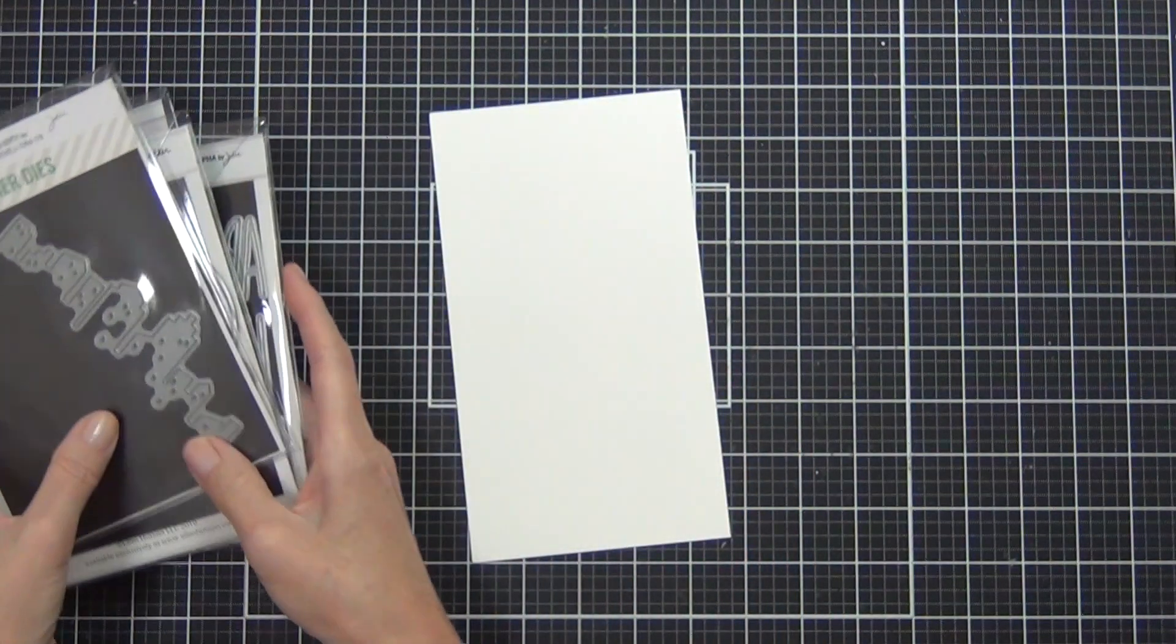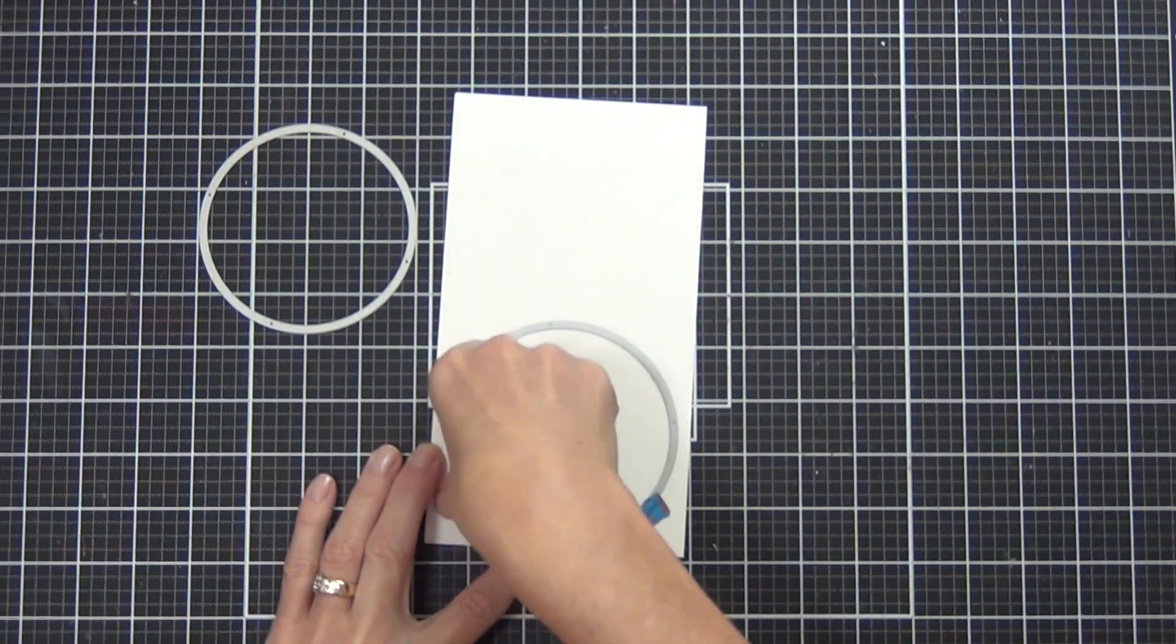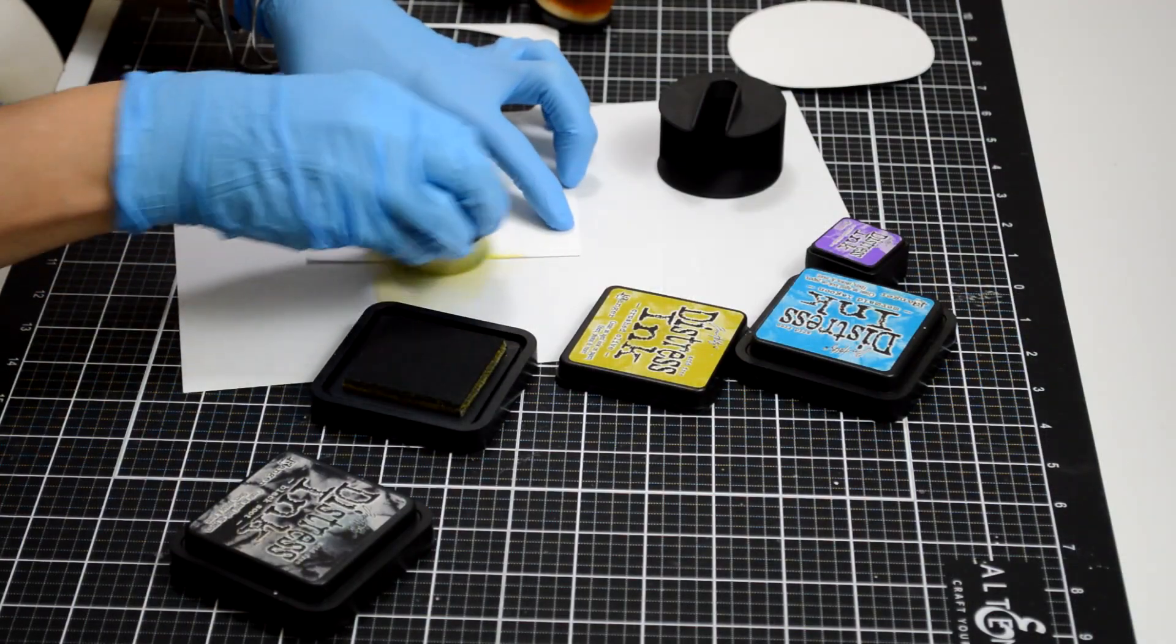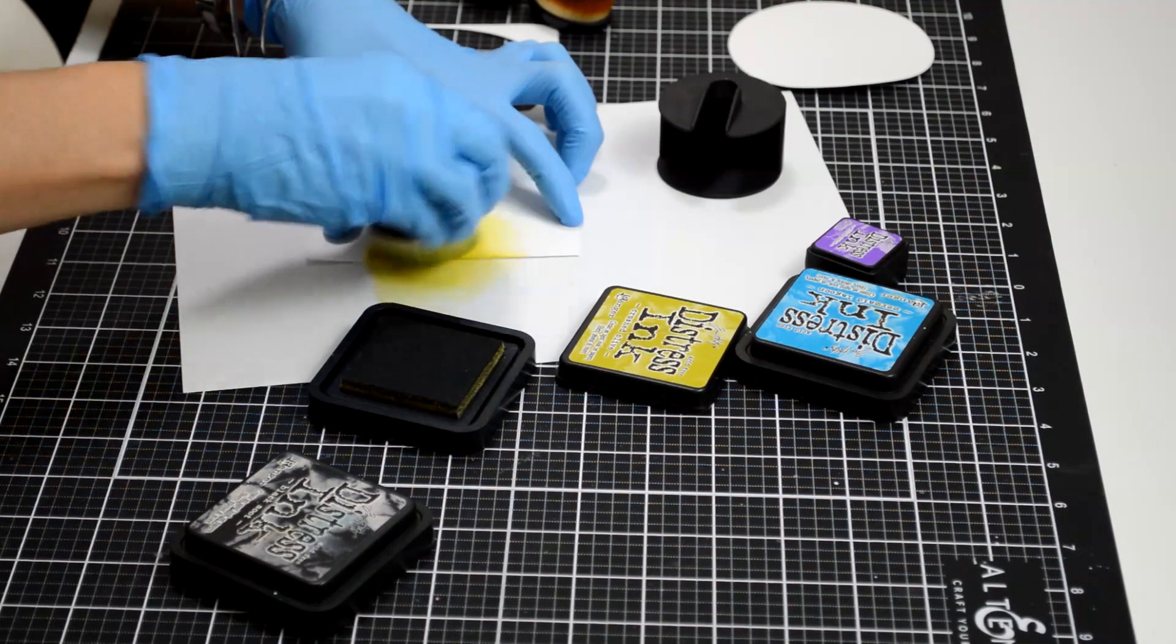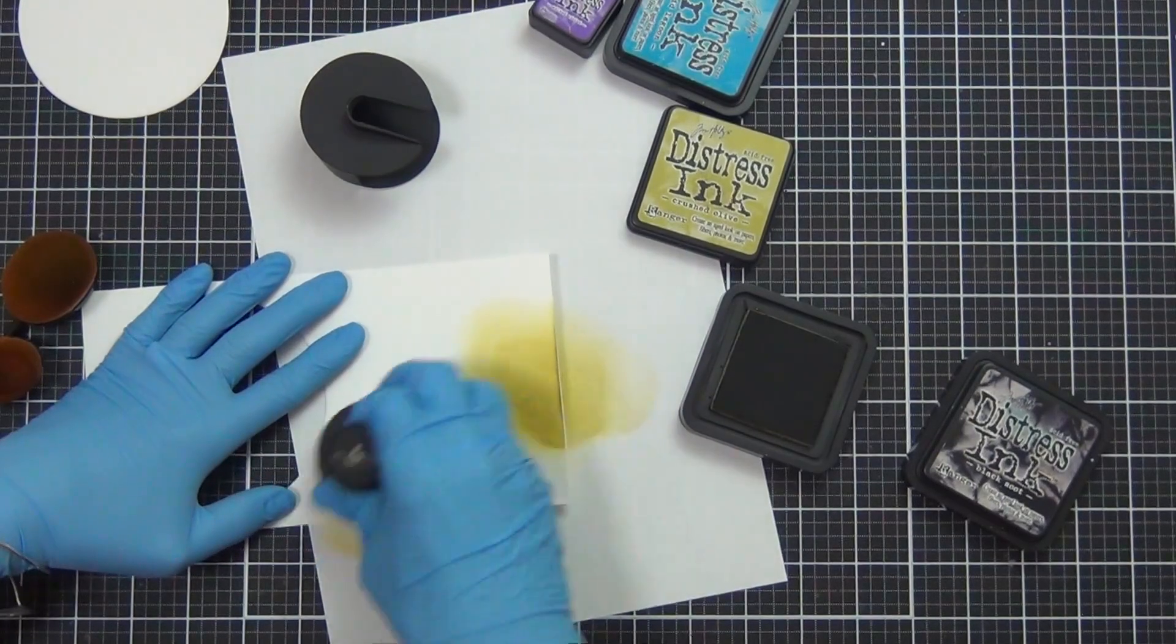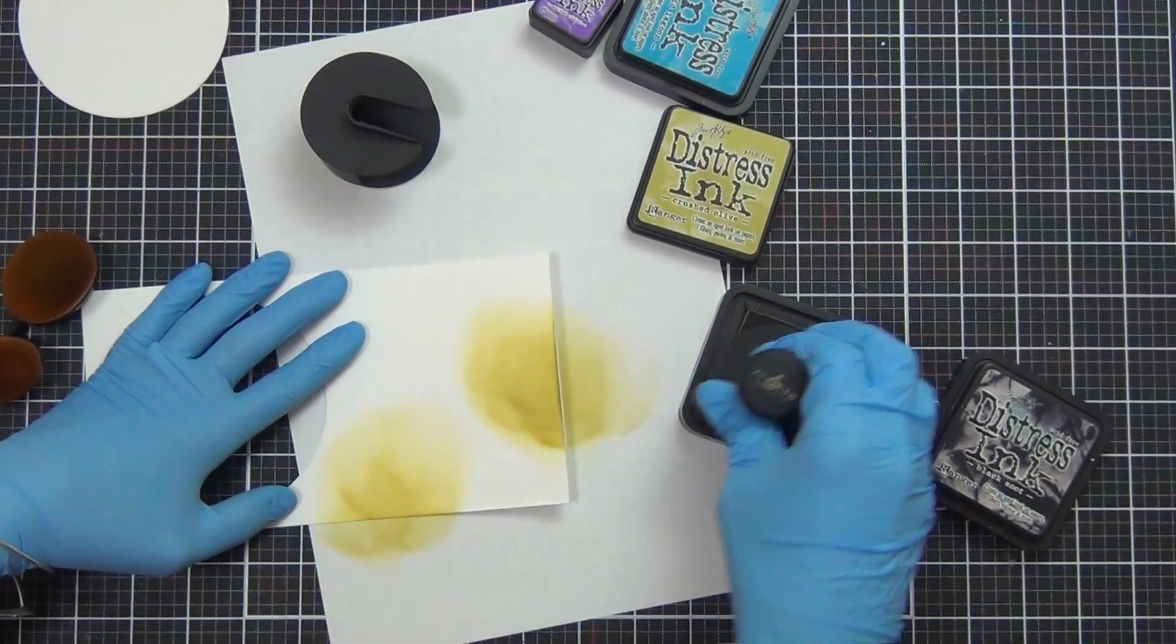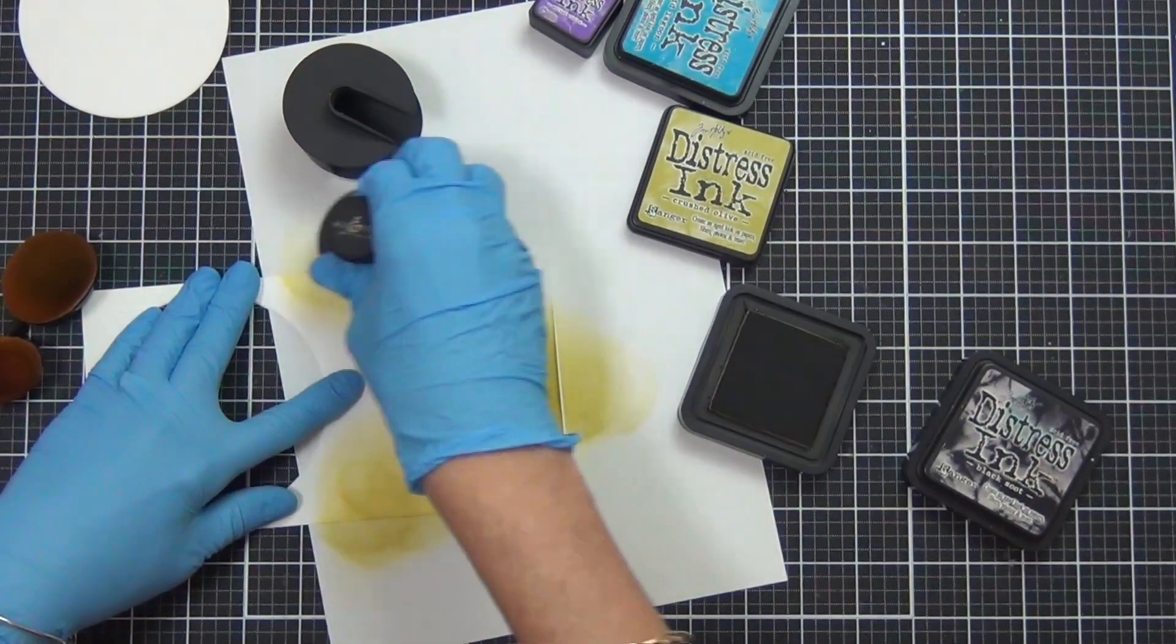I'm going to start by doing some die-cutting. I've chosen the two largest circles. I really like big tags on my presents, almost card size, makes me happy. The bigger the better. And I want to die-cut two layers for this card, but the second layer I want to be almost like a galaxy background.